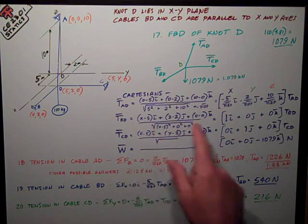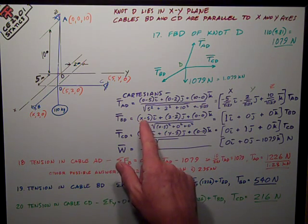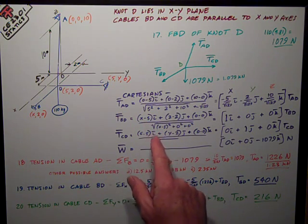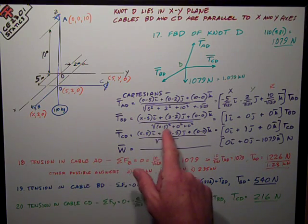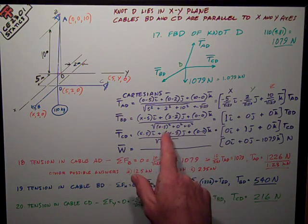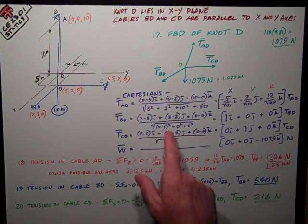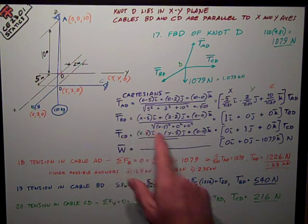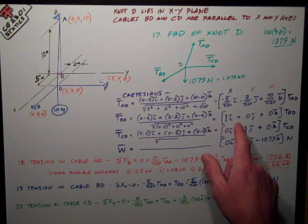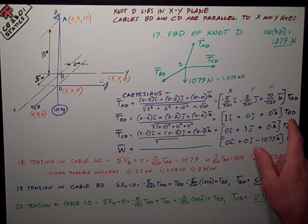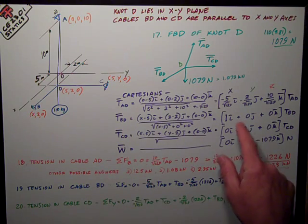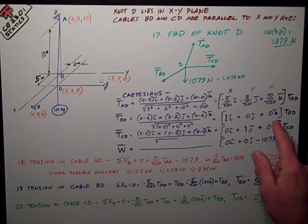So the square root of the sum of the squares is, the only thing I've got is my x coordinate, x value, which is, I've just drawn it out here to be goofy. The x minus 5 squared, the square root of that is x minus 5 divided into x minus 5 is 1. So the Cartesian format of TBD is 1i, 0j, 0k.